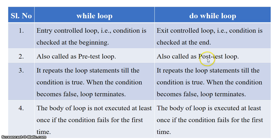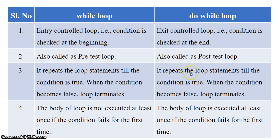In while loop, the loop statements are repeated till the condition is true. When the condition becomes false, the loop terminates. The same applies to do-while loop — the statements within the body of do-while are executed till the condition is true, and when the condition becomes false, the loop terminates.